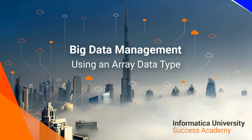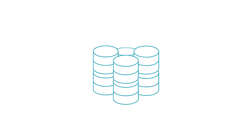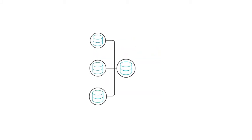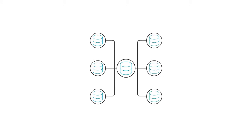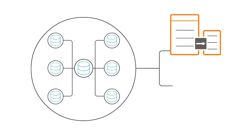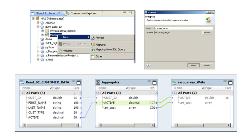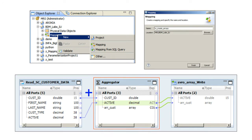Welcome to Informatica University Success Academy. An array data type represents an ordered collection of elements. You can create a field of array data type that has multiple values of the same data type. You can use an array data type in a mapping and write it to a complex file type such as Avro or Parquet. In this video, you will watch how to read a scoop data object and use an aggregator transformation to create an array port, then write the data to an Avro file.